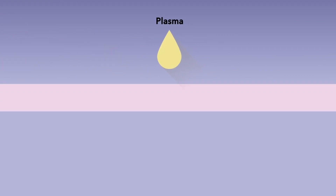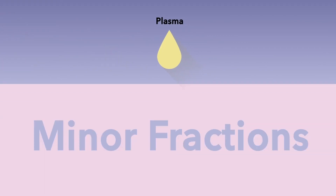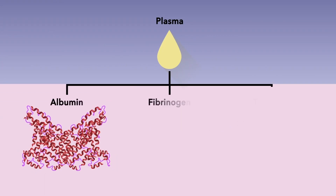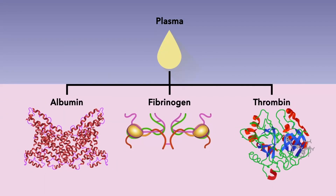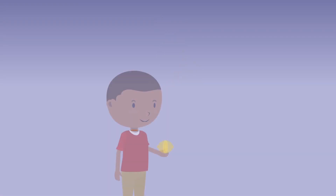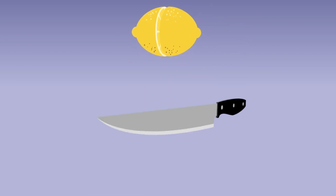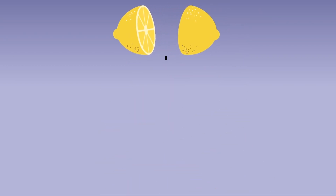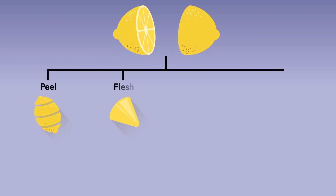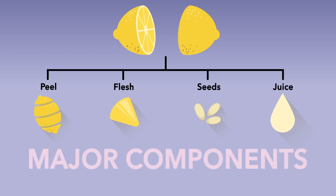Substances taken out of these four components are called minor fractions. To understand the difference between major components and minor fractions, it might help to use the example of a lemon. Like whole blood, a lemon can be broken down into four parts: the peel, flesh, seeds, and juice. These are the lemon's major components.